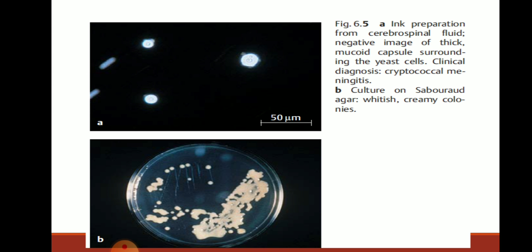Image A shows an ink preparation from cerebrospinal fluid with a dark background and round bodies having a thick mucoid capsule. Image B shows Sabouraud agar culture medium, where we can see white creamy colonies of Cryptococcus.